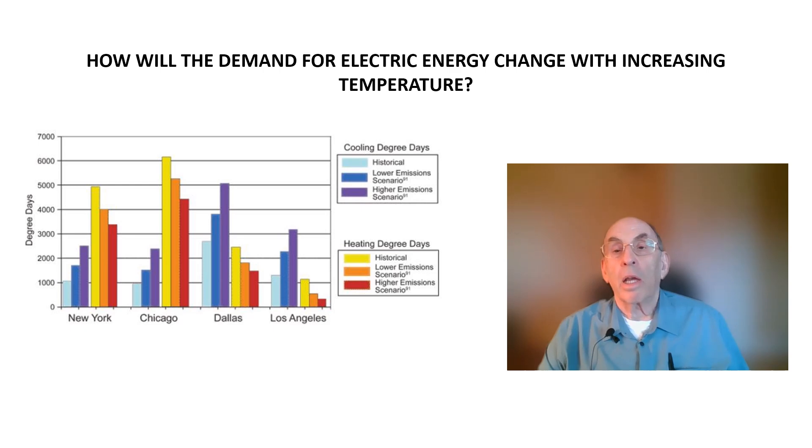The light blue bars indicate the demand for air conditioning in each of the four cities shown under the unlikely assumption that greenhouse gas emissions don't increase. The blue bars show how the demand for air conditioning will increase if significant controls on greenhouse gas emissions are put in place globally. And the purple bars show how the demand for air conditioning increases if we experience business as usual with respect to greenhouse gas emissions.